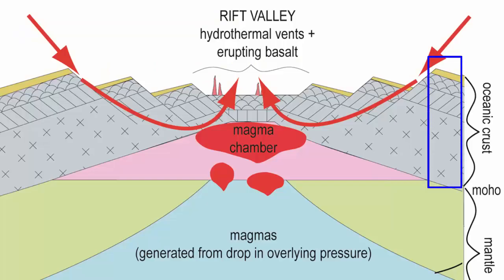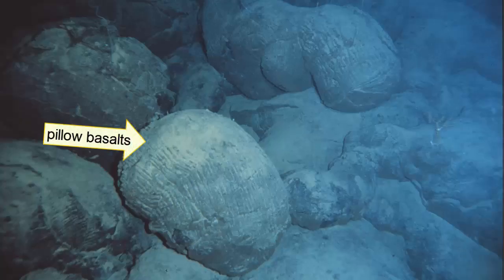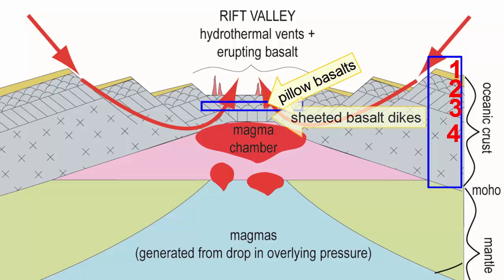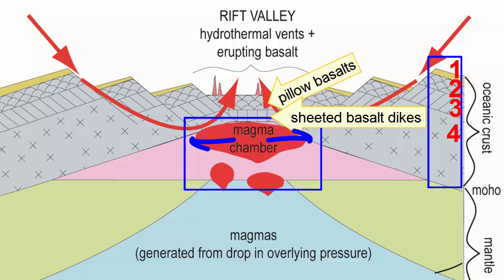The new ocean crust that forms at these ocean ridges consists of four main layers. The magma that erupts on the seafloor cools quickly under high pressure, cold water, and forms structures that look similar to hardened toothpaste squirted out of a tube — they're called pillow basalts. The cracks in the crust that fed the magmas to the surface cool to form vertical walls of basalt called sheeted basalt dikes. The chambers that hold the magmas under these ridges will also spread; as their outer edges cool, they crystallize slowly to form a larger crystal rock with the same composition as basalt, but now called gabbro.